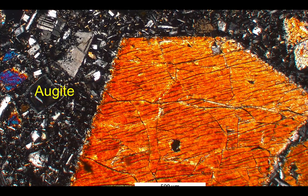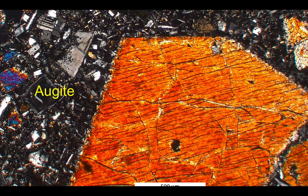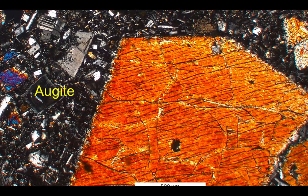Augite gives an interesting range of colours. This particular specimen is actually taken from the volcano of Arthur's Seat in Edinburgh, and we can see a very large augite crystal in this sort of orangey-brown colour, with quite well-formed crystal edges. But there's also a sort of bluish-reddish colour, with a bit of orange around the edge, on the far left-hand side of the screen. That's augite as well. Its colour does vary a little, depending on the exact chemical composition of the augite.